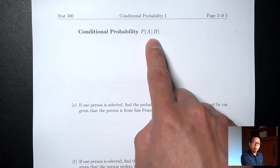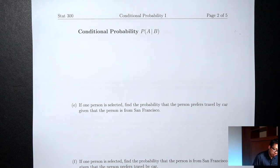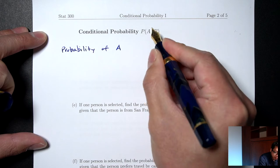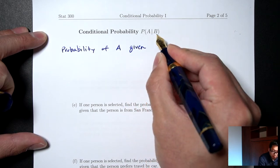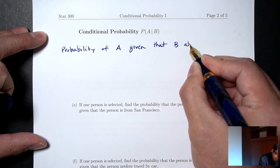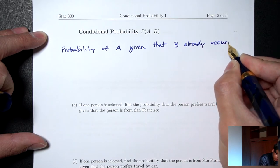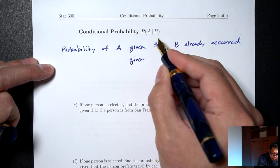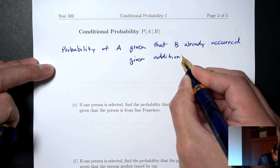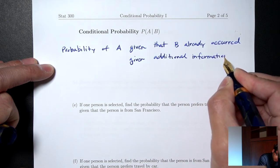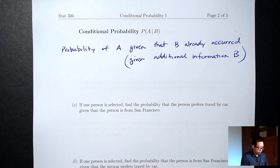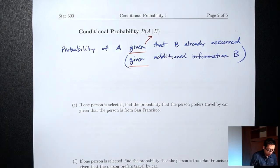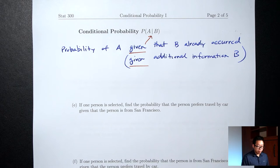Conditional probability. The symbol for conditional probability is P(A|B), and the way you read that is 'probability of A given that B already occurred.' Another way to think about this is 'probability of A given additional information B.' The vertical line stands for the word 'given.' So anytime you see the word 'given' in a question, it's asking for conditional probability.